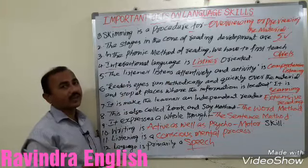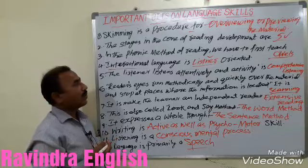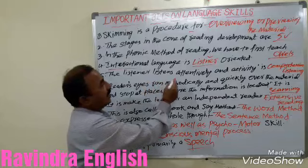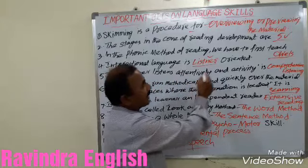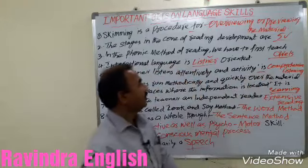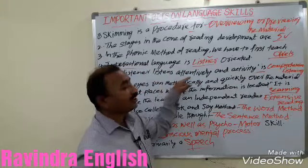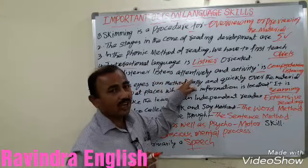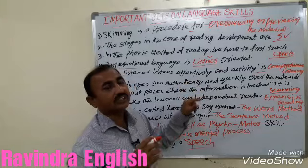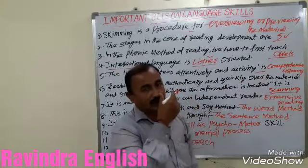Listener-oriented. The listener listens attentively, and the activity is the dash. Listener listens attentively — so all are careful. Reading with understanding — that is called comprehensive listening.